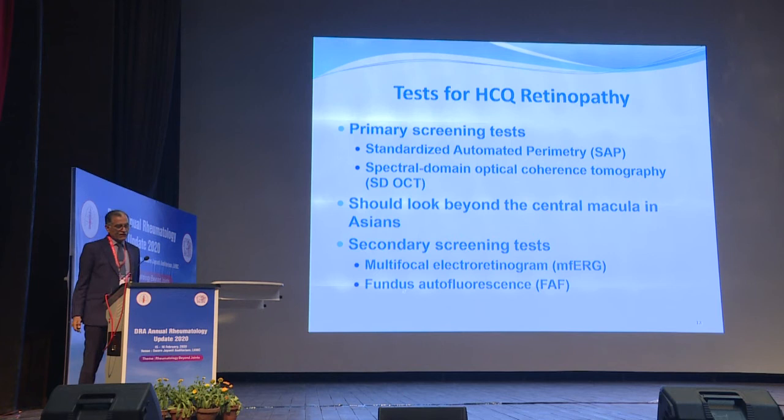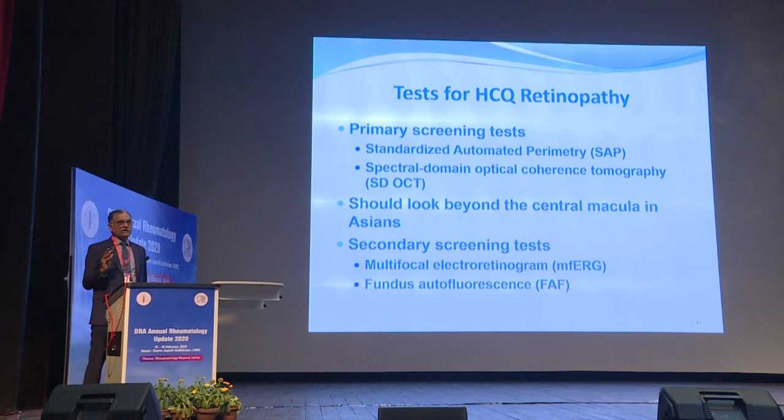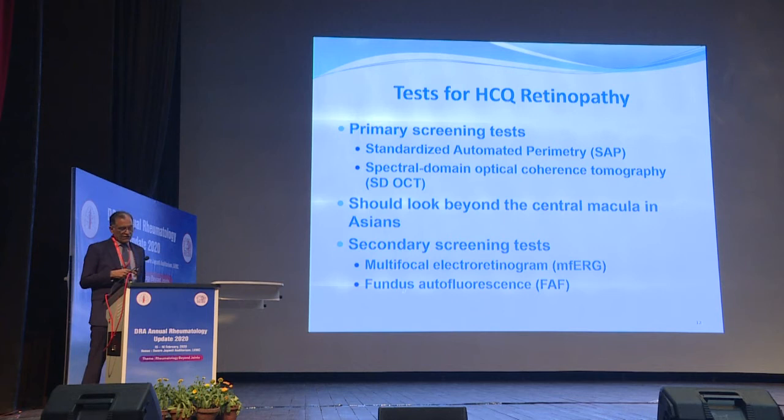The primary screening tests for hydroxychloroquine retinopathy are standardized automated perimetry and spectral domain optical coherence tomography — these two are done annually. In Asian patients, one should look beyond the central macula. Secondary screening tests include multifocal electroretinogram and fundus autofluorescence.